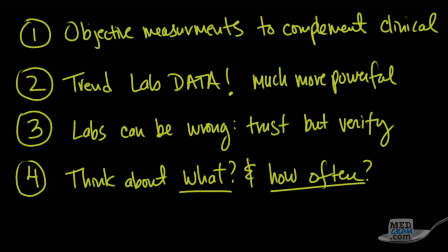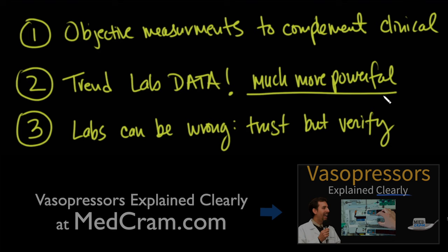Okay, so the four points that I want you to get out of this first lecture, sort of the introduction and the philosophy of lab data, is these are objective measurements, and they're meant to complement the clinical impression. So you need to put together this data with what it is that you see in front of you. That's number one. Number two is always trend this data, because it's in the trends that tells you where things are moving, not just the snapshot data that you get. To trend it is much more powerful.